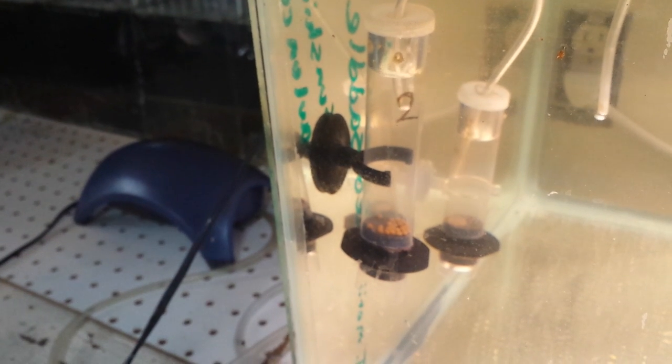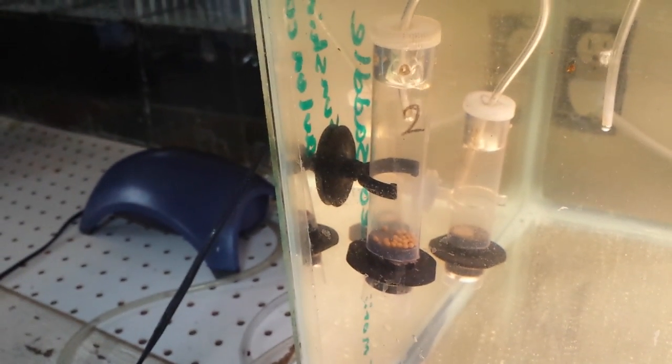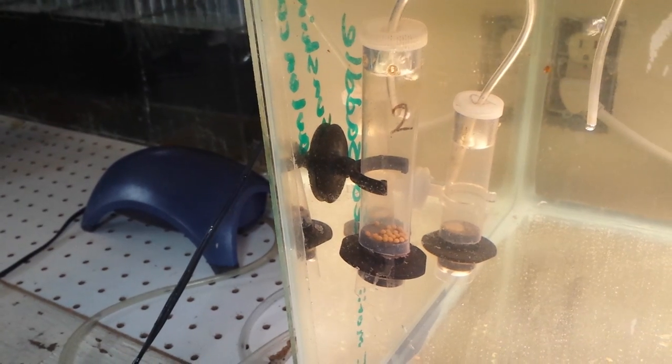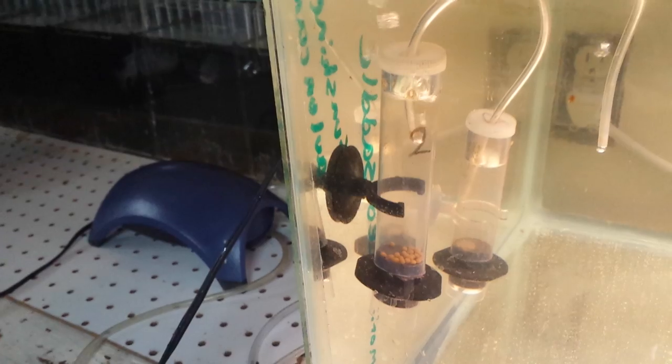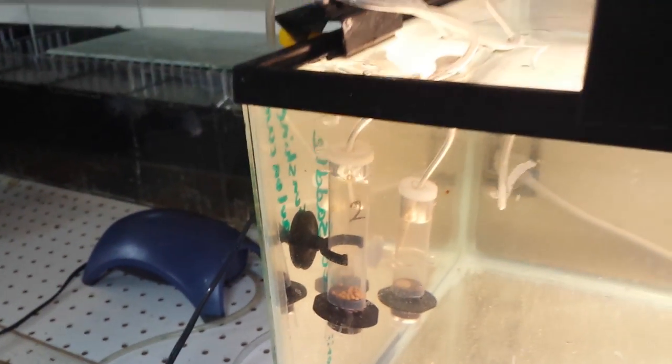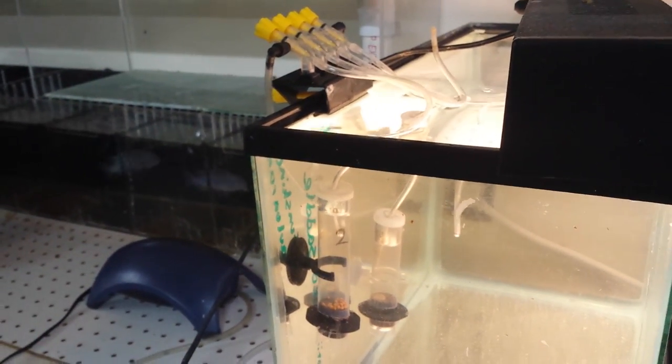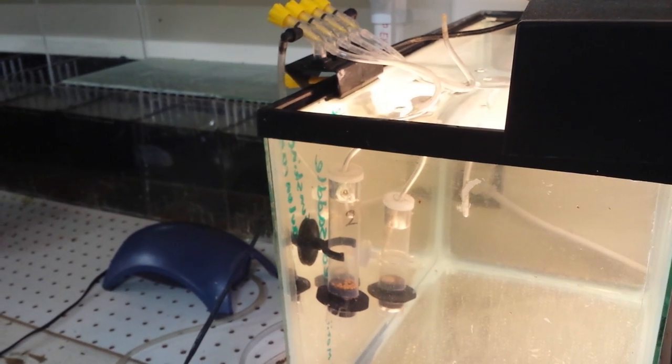Those are definitely good, healthy, viable eggs because of their flesh color. Usually if the eggs go bad they'll end up turning white. You want to remove those eggs because they will fungus over and kill the rest of the other eggs. But there you go that's pretty much how an egg tumbler works and these should hatch out in about 20 days.